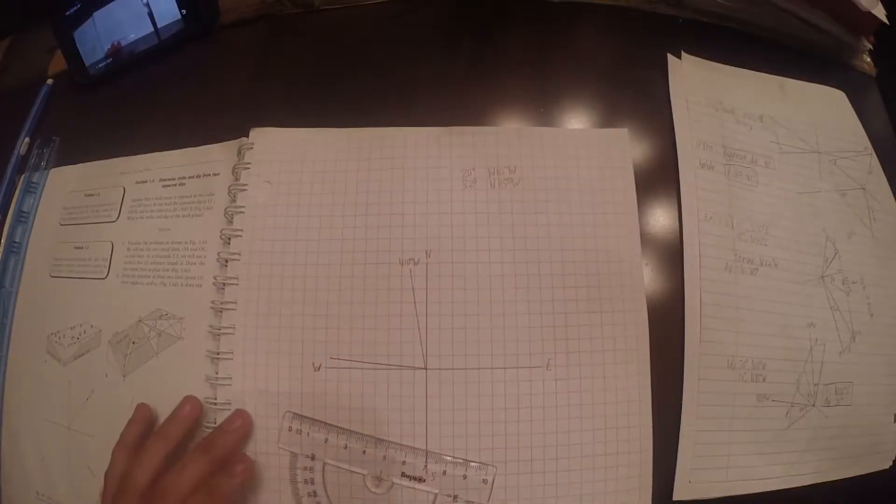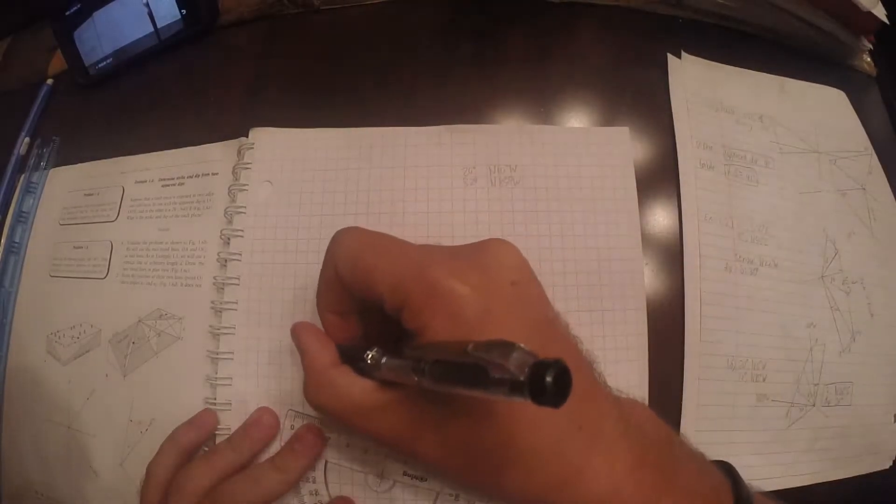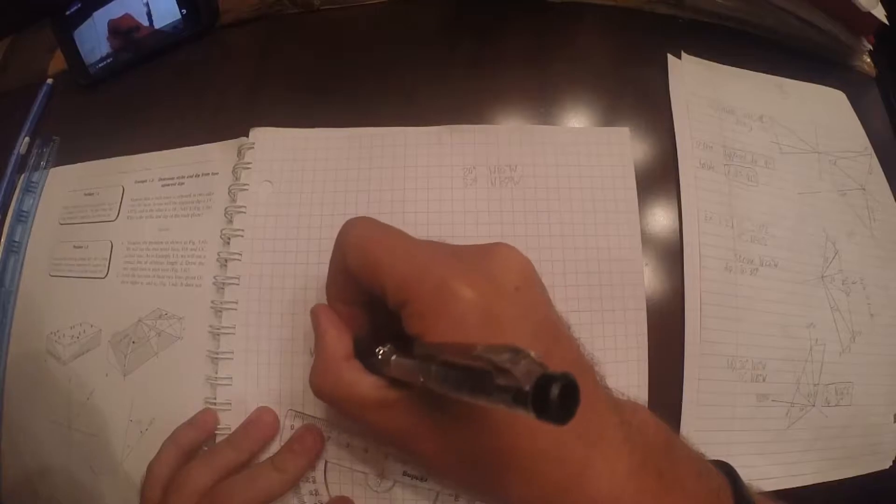And then you also have north 85 degrees west. Alright, so we've got that in there. So, we've gone on to trend lines. Now, I forgot to indicate north 85 degrees west.